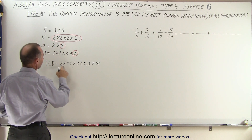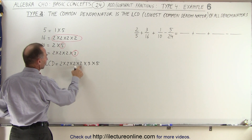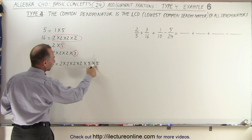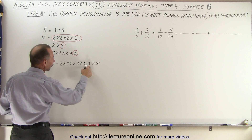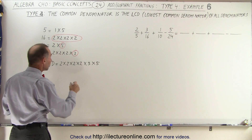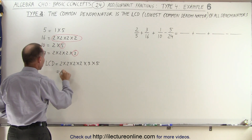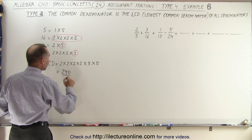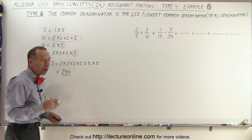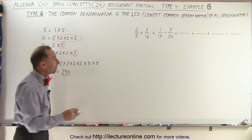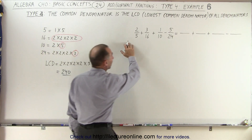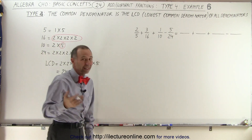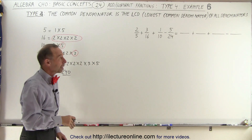Let's see: 2 times 2 times 2 times 2 is 16, times 5 is 80, times 3 is 240. That's a big denominator, but it's a lot smaller than if we had simply multiplied all the denominators together. So 240 is the lowest common denominator.